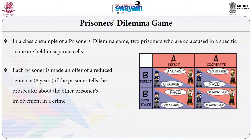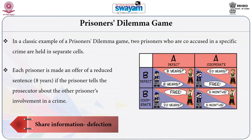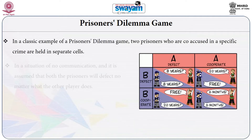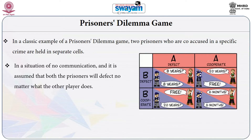If a prisoner tells the prosecutor that the other person committed the crime, they go free while the other gets 20 years of jail. This offer is made to both prisoners. The defection strategy is sharing information implicating the other person; the cooperation strategy is remaining silent — essentially saying neither was involved — resulting in a reduced sentence or acquittal, and being out of jail in six months.